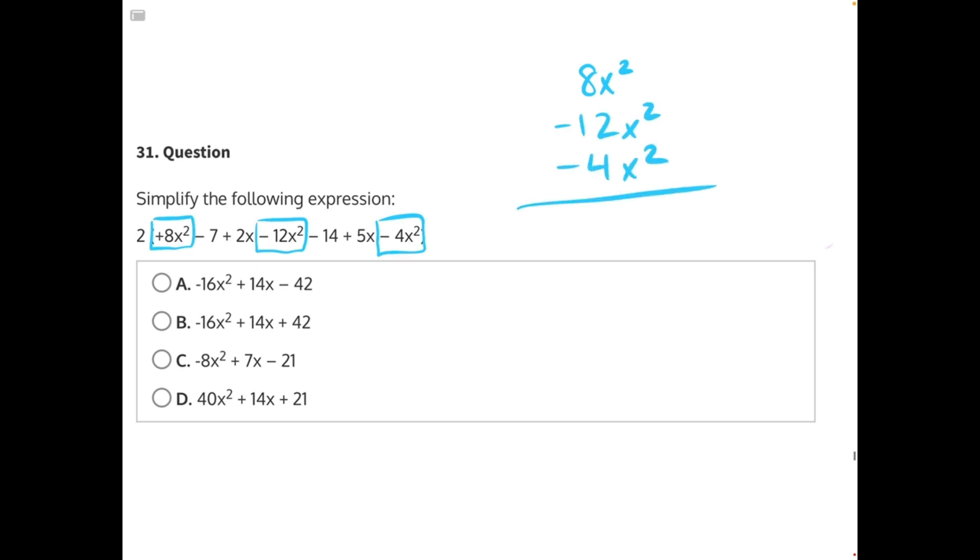Let's start by combining those negatives. Negative 12 plus negative 4 will give us negative 16. So we'd have 8x squared minus 16x squared. That will give us 8. The biggest number carries the sign. 16 is the bigger number here, so it's going to be a negative 8x squared.